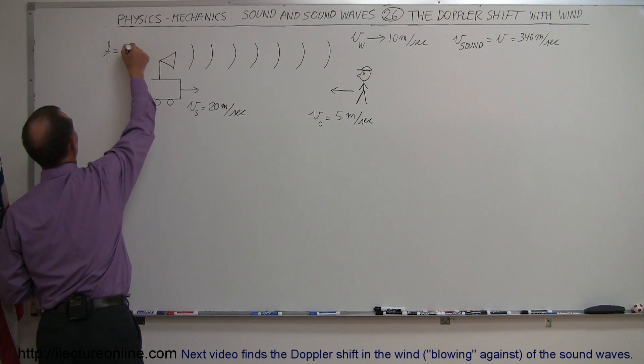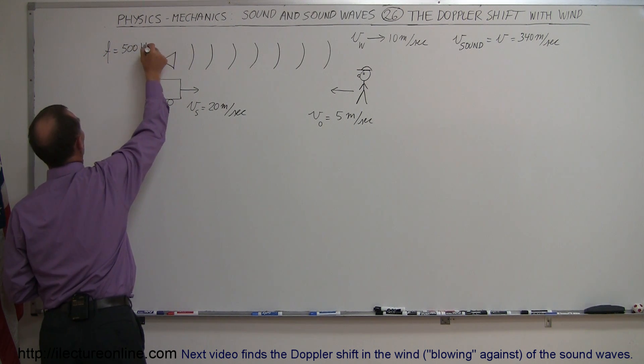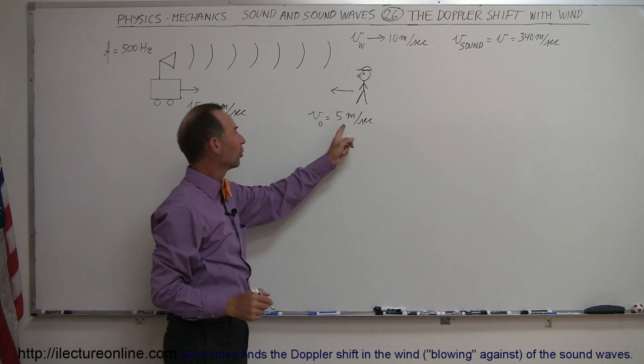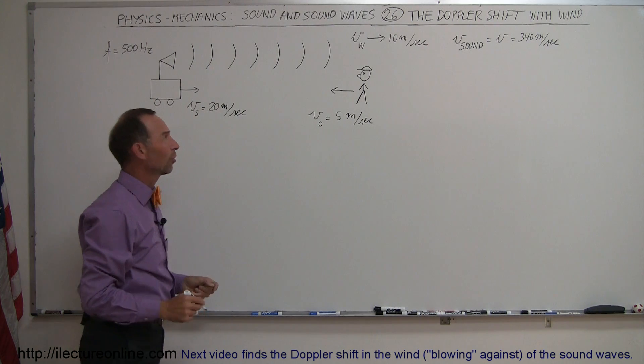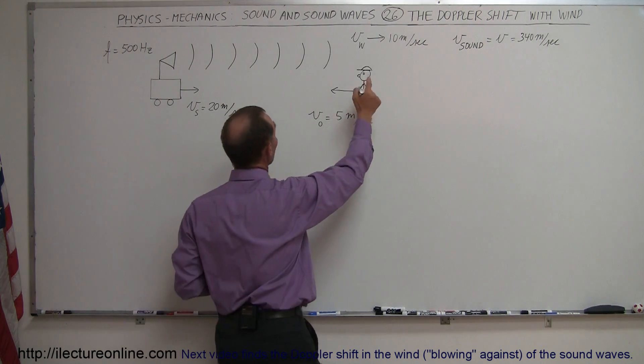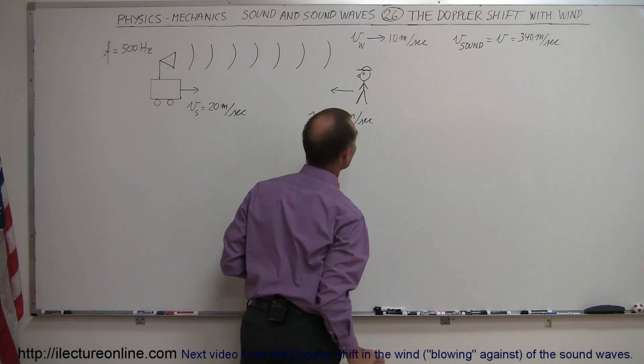So frequency 500 hertz from the source. What will the observer hear, who is walking towards the source as the source is moving towards the observer, but also there's a wind blowing from the left to the right of 10 meters per second.